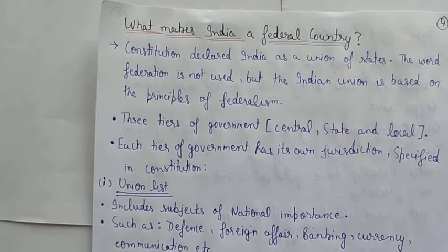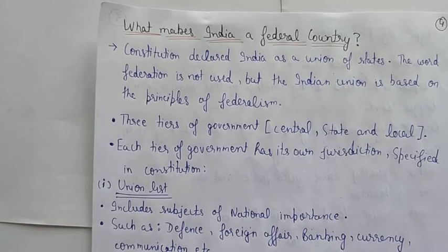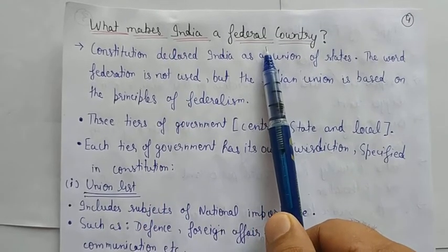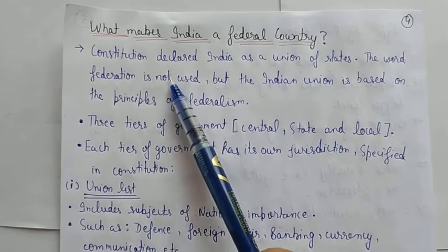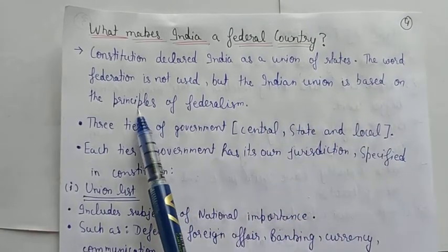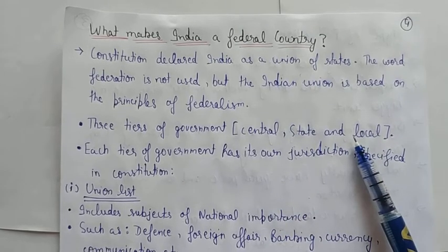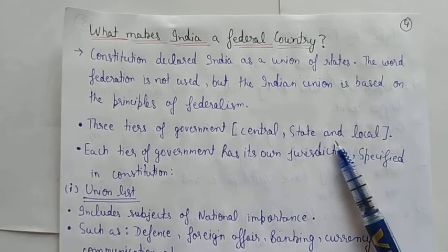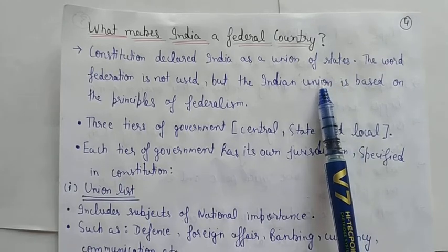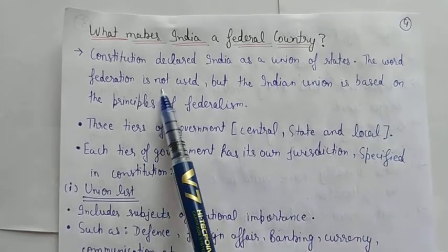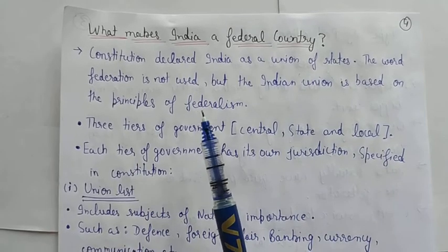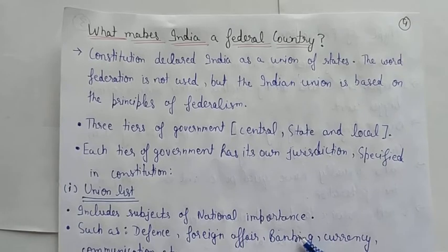In this chapter we will discuss what makes India a federal country — kya cheezein hain jis ki wajah se India ko federal country kaha jayega. The Constitution declared India as a Union of States. The word 'federation' is not used, but the Union is based on the principle of federalism. Jab aapka Constitution banaya gaya, jab bharat azad hua, us time India ko 'Union of States' kaha gaya — ye alag-alag states ko ek saath mila ke banaya gaya tha.